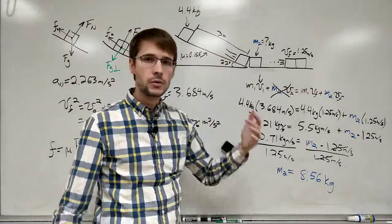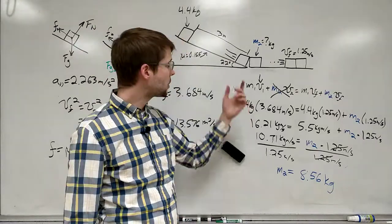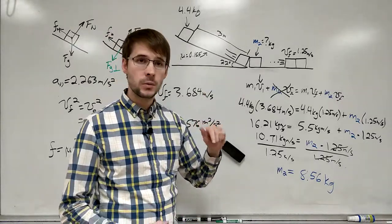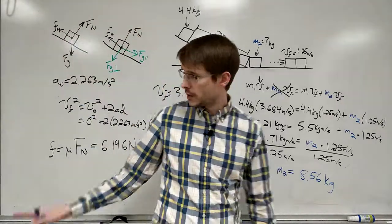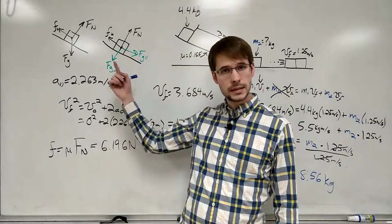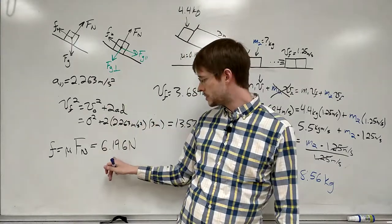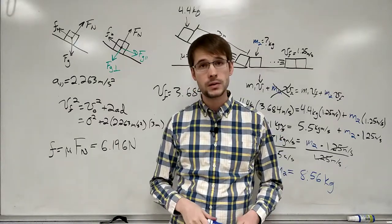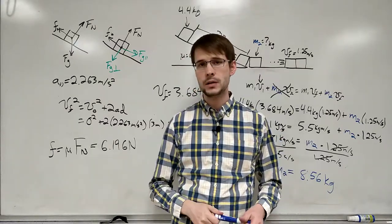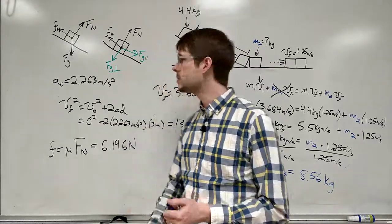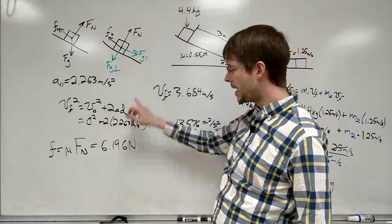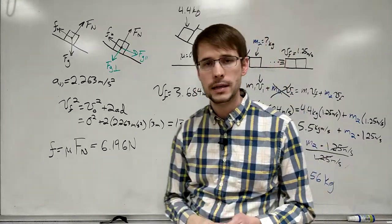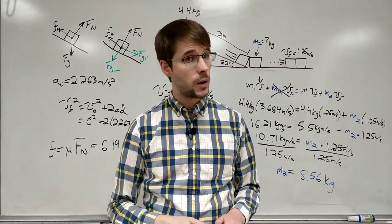At the bottom, we lose all that energy and it gets turned into kinetic energy, but some of it is lost to friction. So we find out the work done by friction, which would just be the force of friction times the distance down the ramp. So 6.196 newtons times 3 meters would be the work done by friction, removing energy from the system. So we take the potential energy at the beginning, minus that number there, and that would be equal to the amount of kinetic energy down at the bottom.